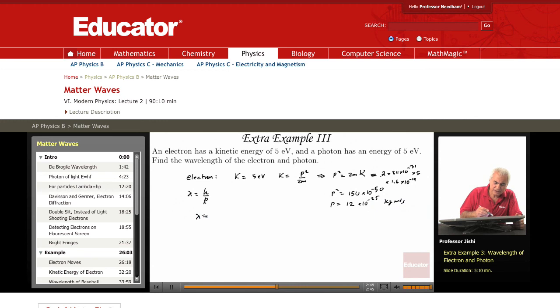So lambda is H over P, that's 6.63 times 10 to the minus 34 joules over P, which is 12 times 10 to the minus 25. Since everything here is SI units, SI units for lambda is meter.